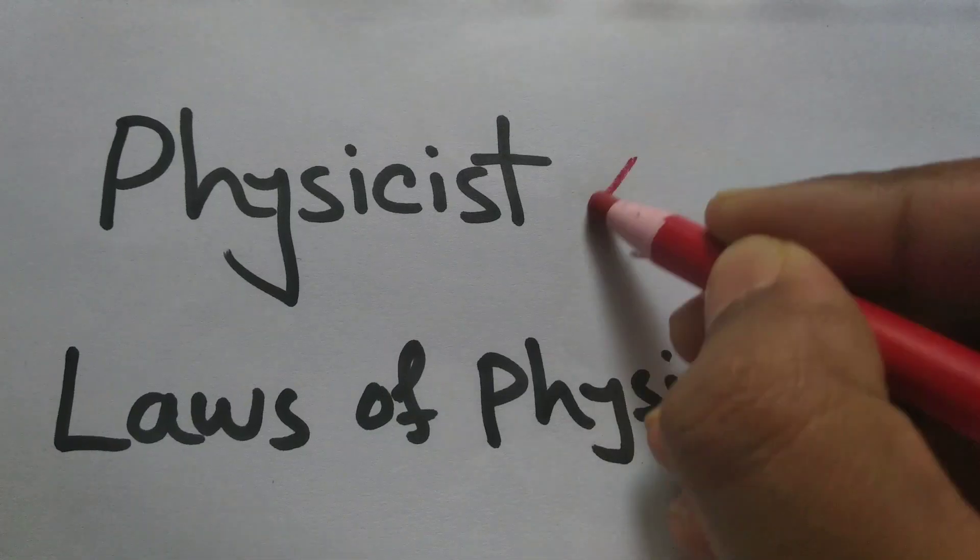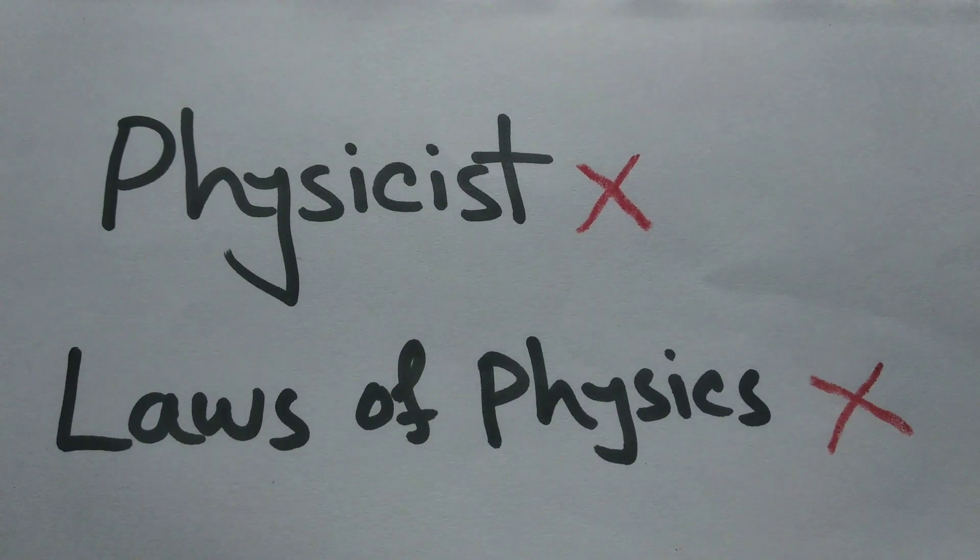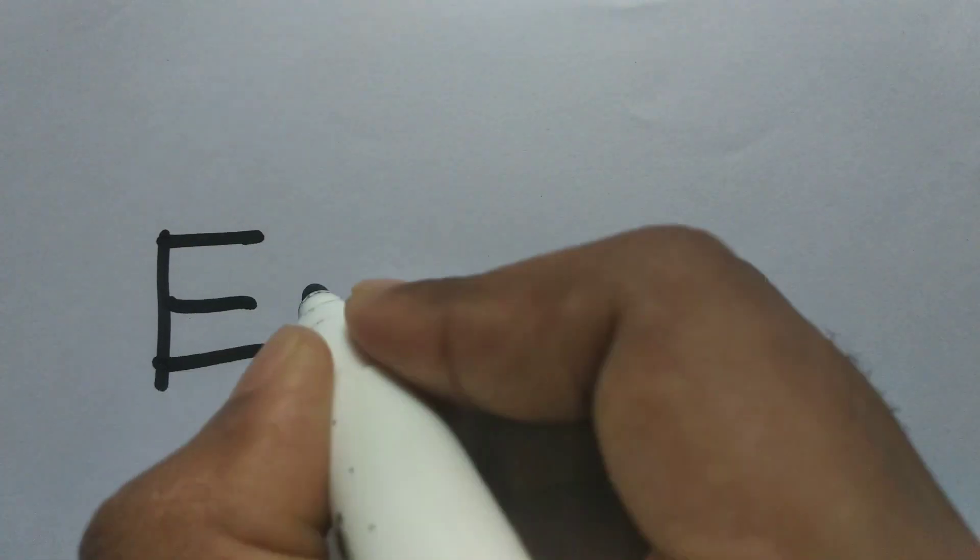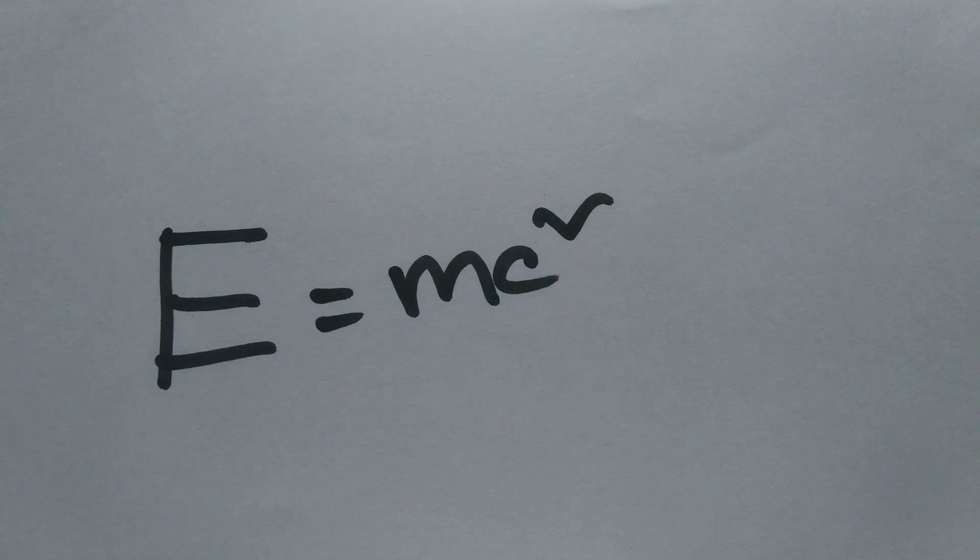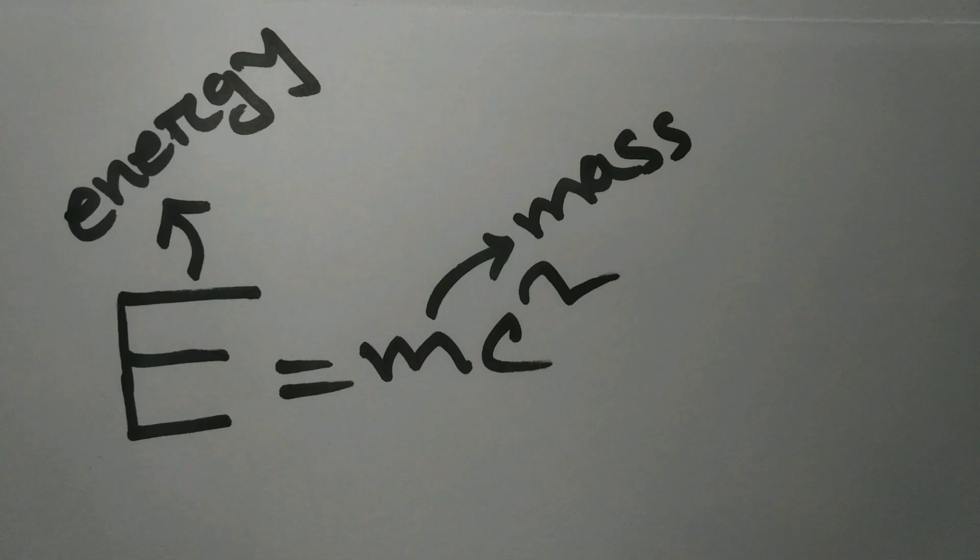If you are not a physicist, don't know any laws of physics, you still probably heard of this equation. E equals mc squared. It is the most famous equation in physics.